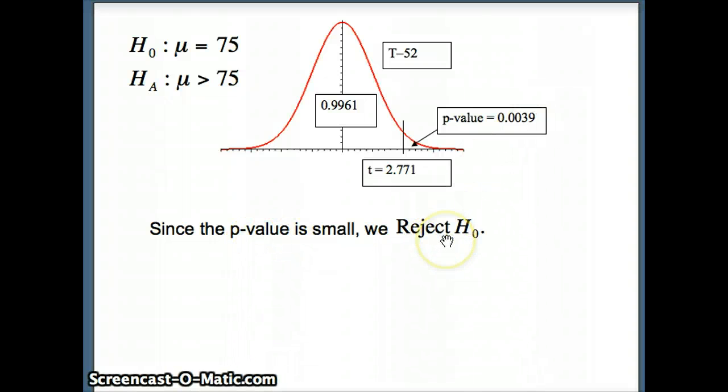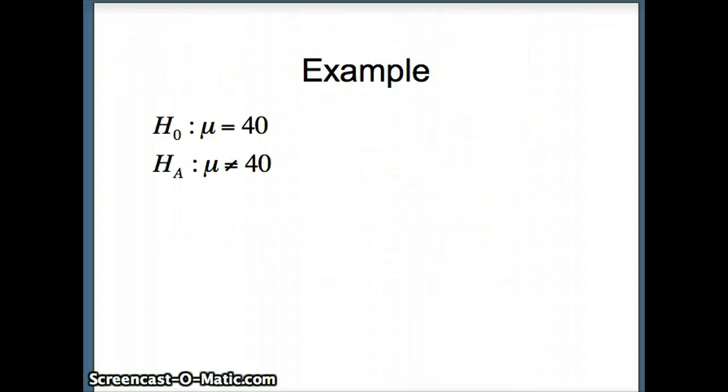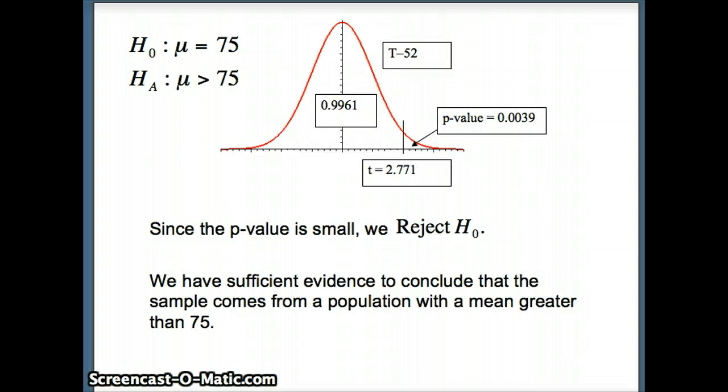Since the p-value is small, 0.0039 is small, we reject the null hypothesis. H₀ is thrown out. What's left is Hₐ, so indeed we have evidence supporting Hₐ. We have sufficient evidence to conclude that the sample comes from a population with a mean greater than 75.